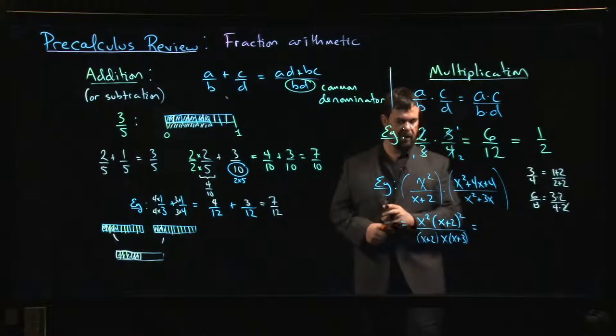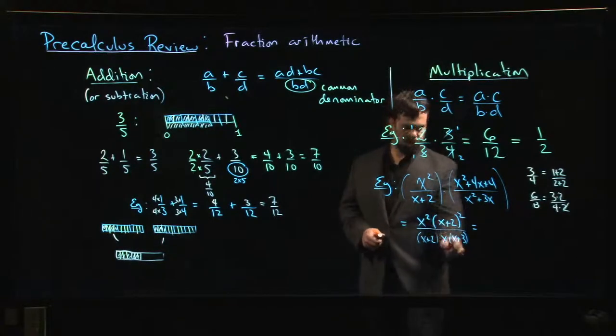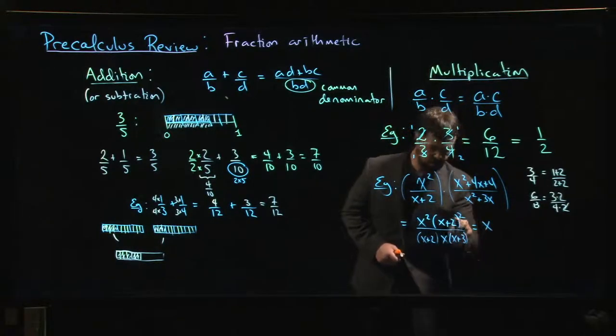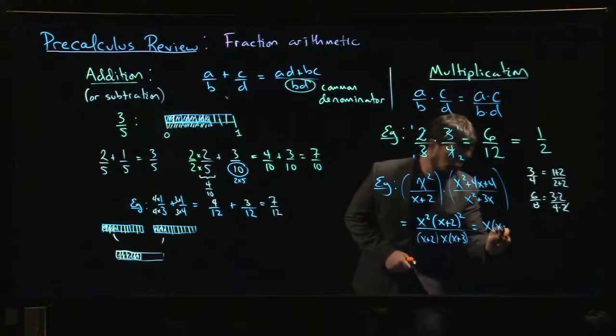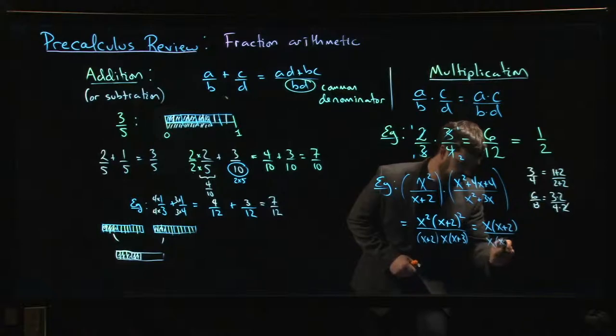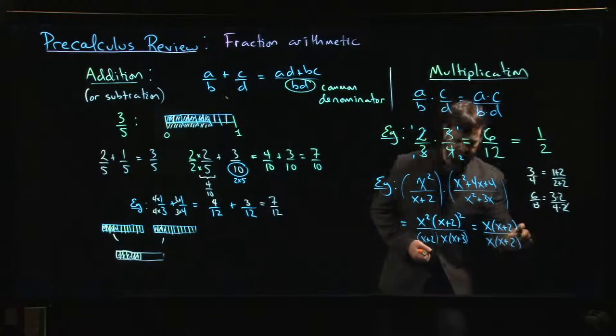And so then I look to see what is some of the common stuff that I can take out from the top and the bottom. Both the top and the bottom have an x, and they both have an x plus 2, so I can do x times x plus 2 over x times x plus 2.